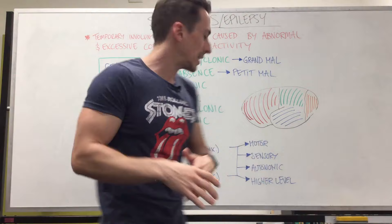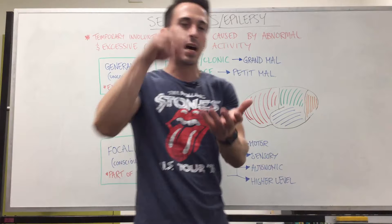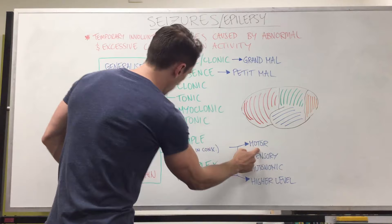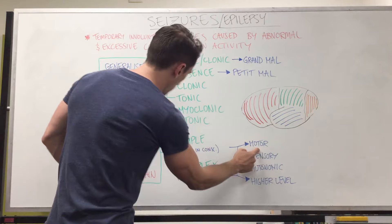So these are the different types of focal or partial seizures: motor, sensory, autonomic, and higher level — all starting in a single location. They can progress and become generalised; focal motor seizures in particular can progress and become tonic-clonic grand mal seizures.